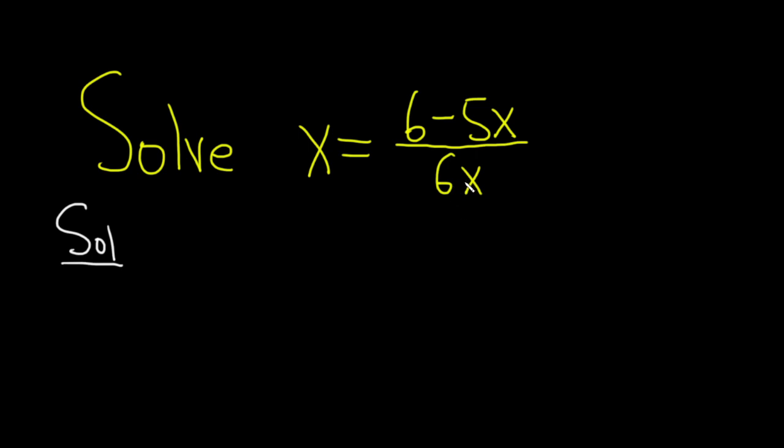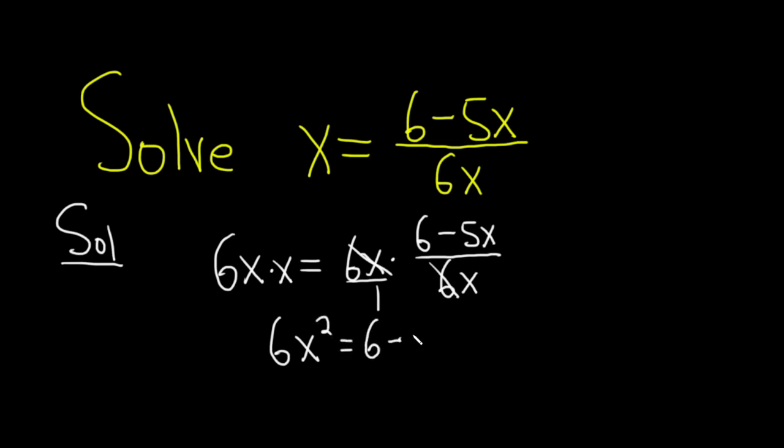We can do that by simply multiplying both sides by 6x. So we have 6x times x, and that's equal to 6x times, here we have 6 minus 5x, over 6x. This is really 6x over 1, so these do cancel. Here we get 6x times x, so that's 6x squared. That's equal to 6 minus 5x.